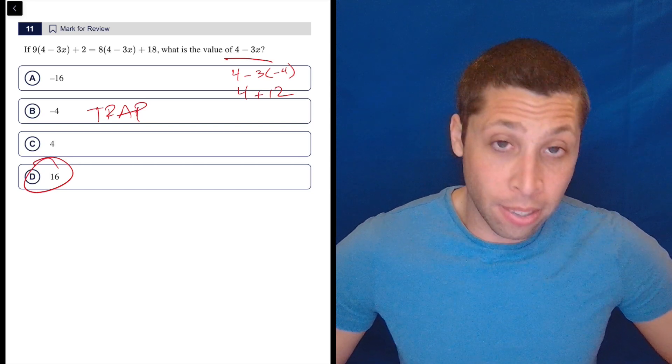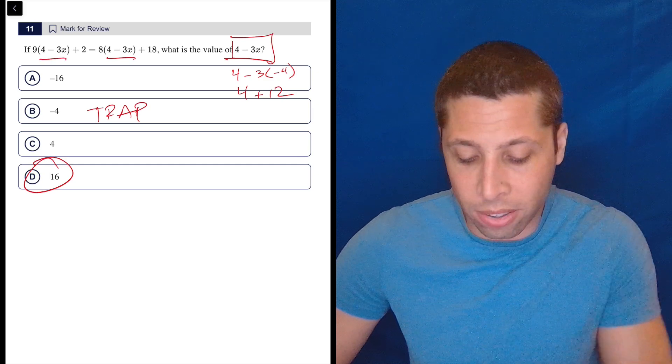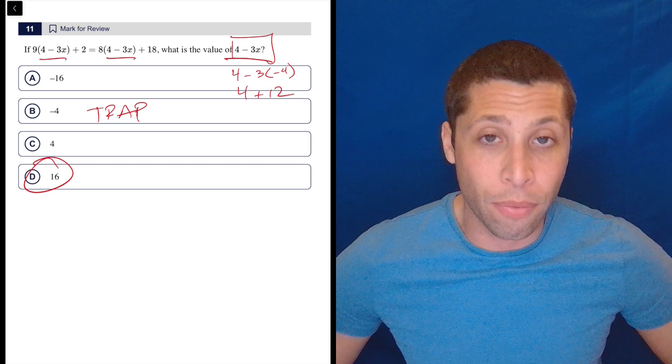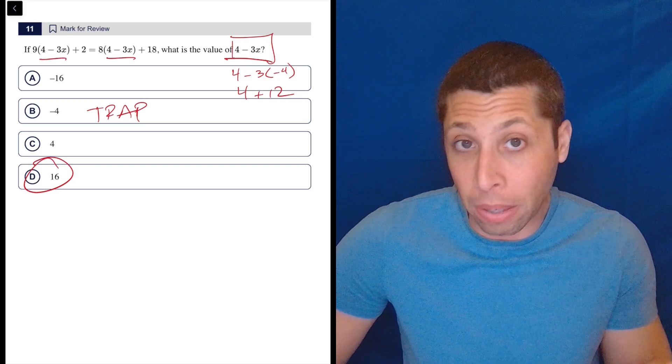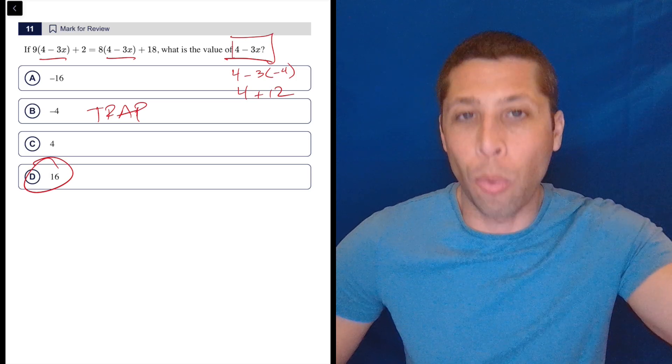Now, in this case, because four minus three X seems kind of random to us, we might not notice that it's also in the equation itself. That's what makes this have a little bit of a shortcut. If we understand how to do algebra in a more next level way.